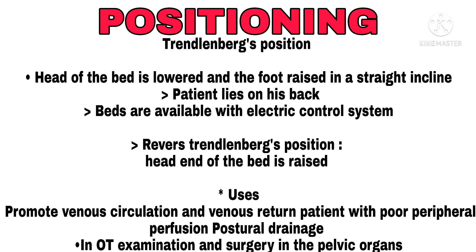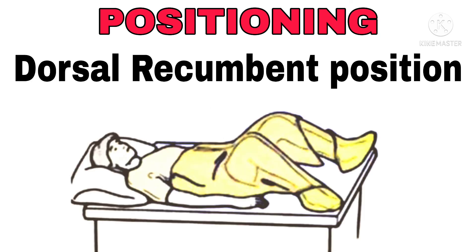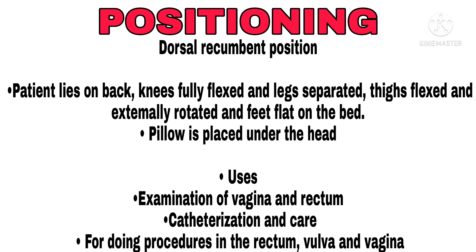Dorsal Recumbent Position: The patient lies on the back with knees fully flexed and legs separated; thighs are flexed and externally rotated, and feet are flat on the bed. A pillow is placed under the head. Uses: examination of the vagina and rectum, catheterization, and care procedures involving the rectum, vulva, and vagina.